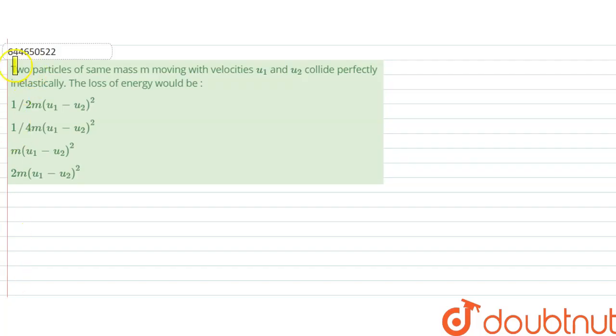The question says two particles of same mass m moving with velocities u1 and u2 collide perfectly inelastically. So the loss of energy would be what? The type of collision is perfectly inelastic.